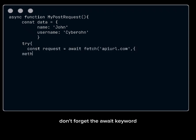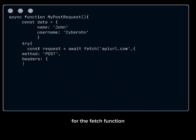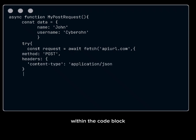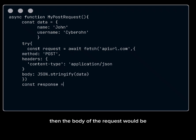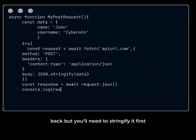Don't forget the await keyword. As a second argument for the fetch function, create a code block. Within the code block, specify the method of the request as POST, add a header, then set the body of the request to the data you want to send to the server — but you'll need to stringify it first to be in JSON format.